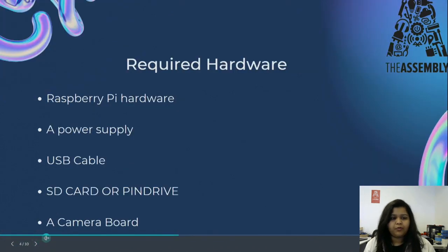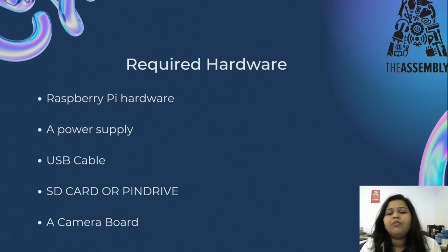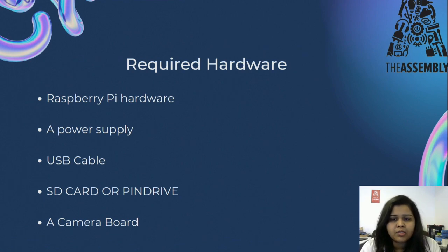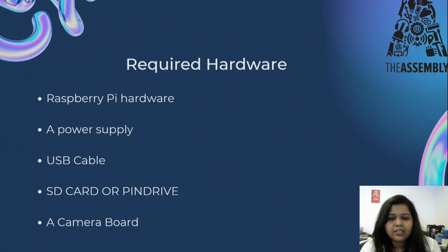For this project we need some required hardware. First is the Raspberry Pi hardware, second is the power supply, third is the USB cable, fourth is the SD card or you can use a pen drive, and fifth is the camera board that is attached to the Raspberry Pi.